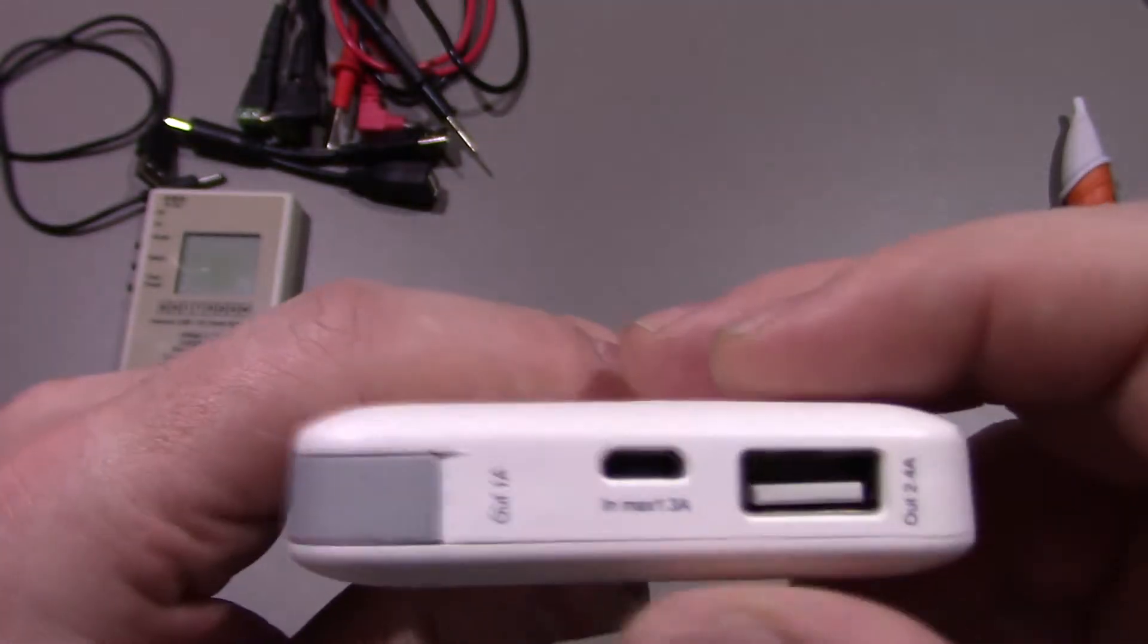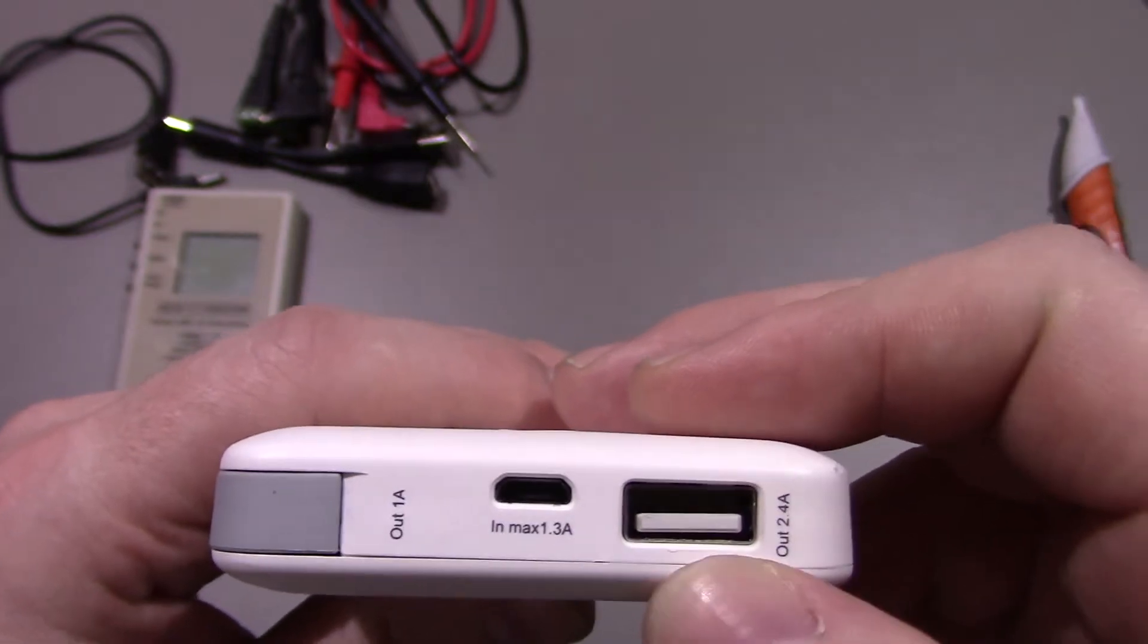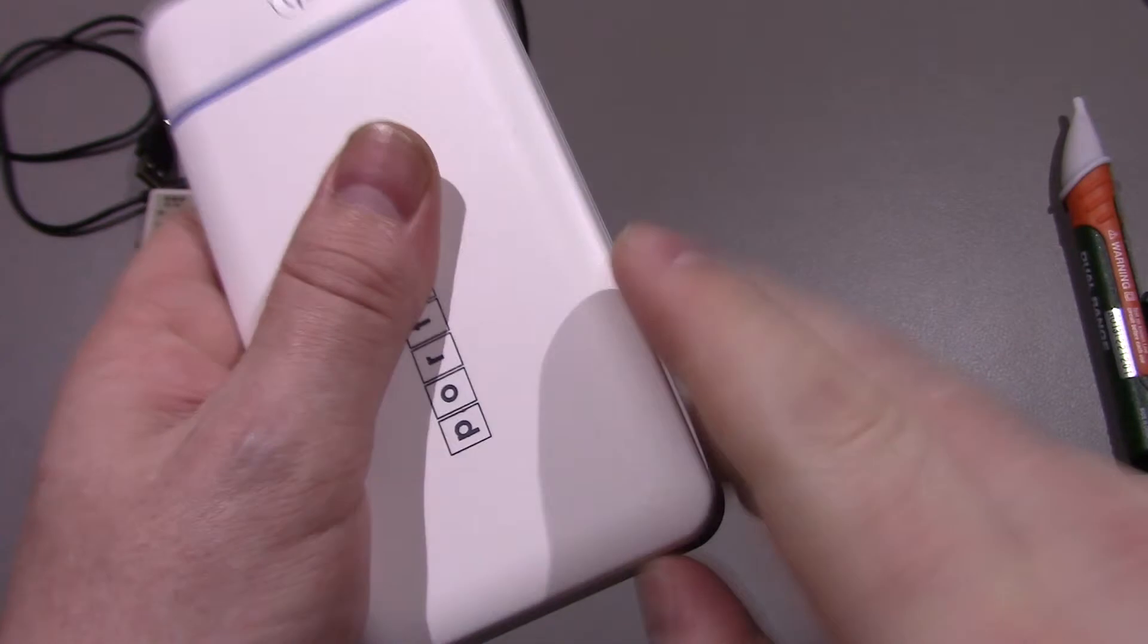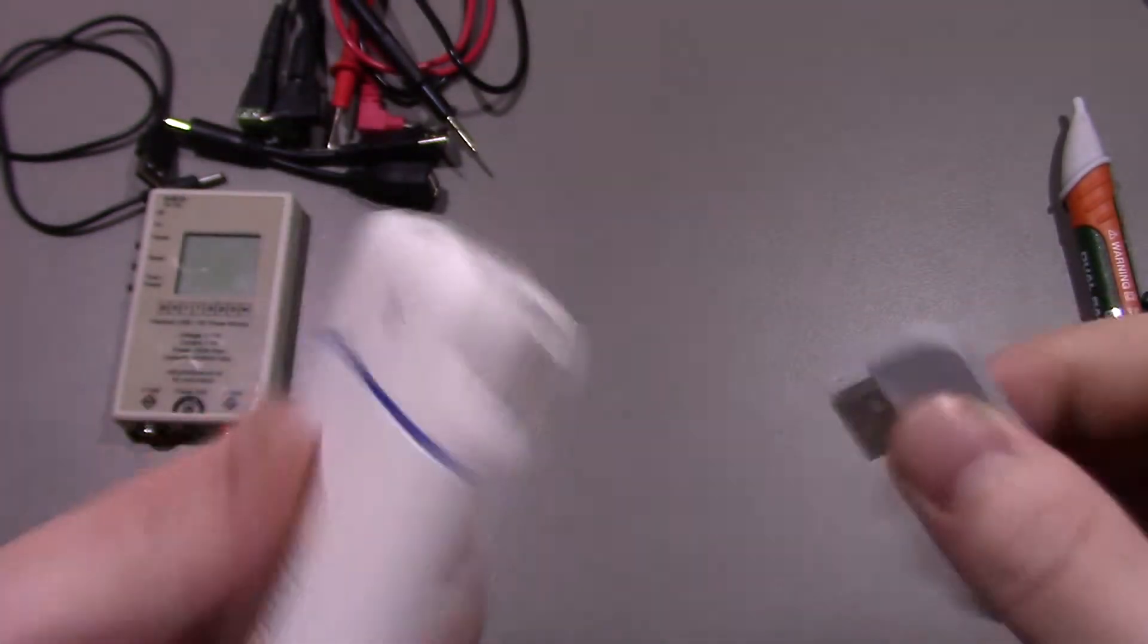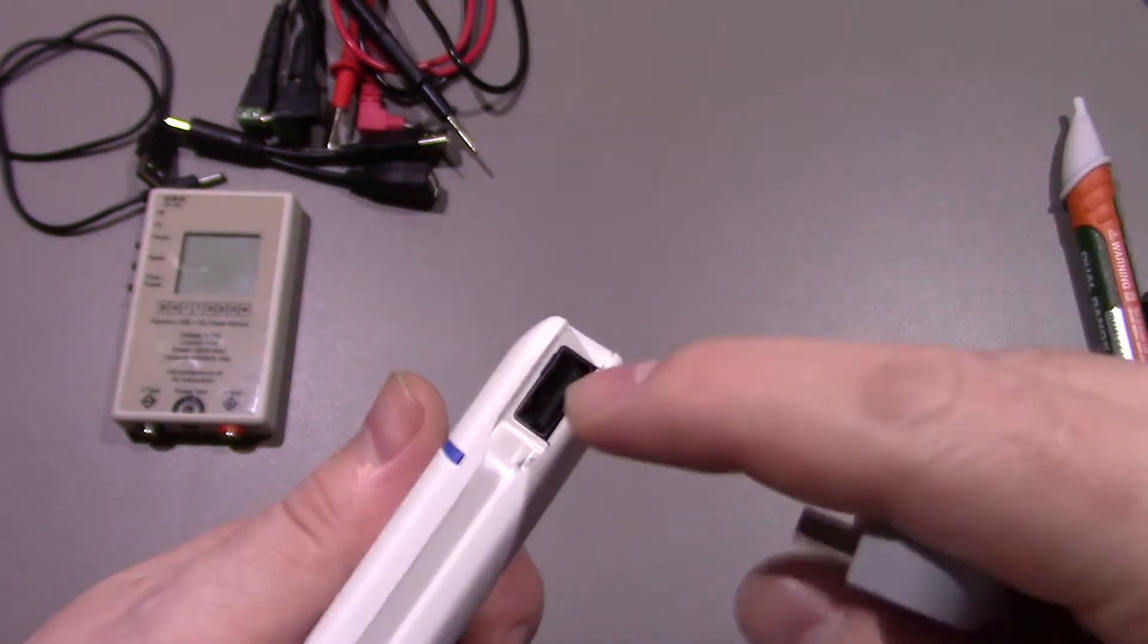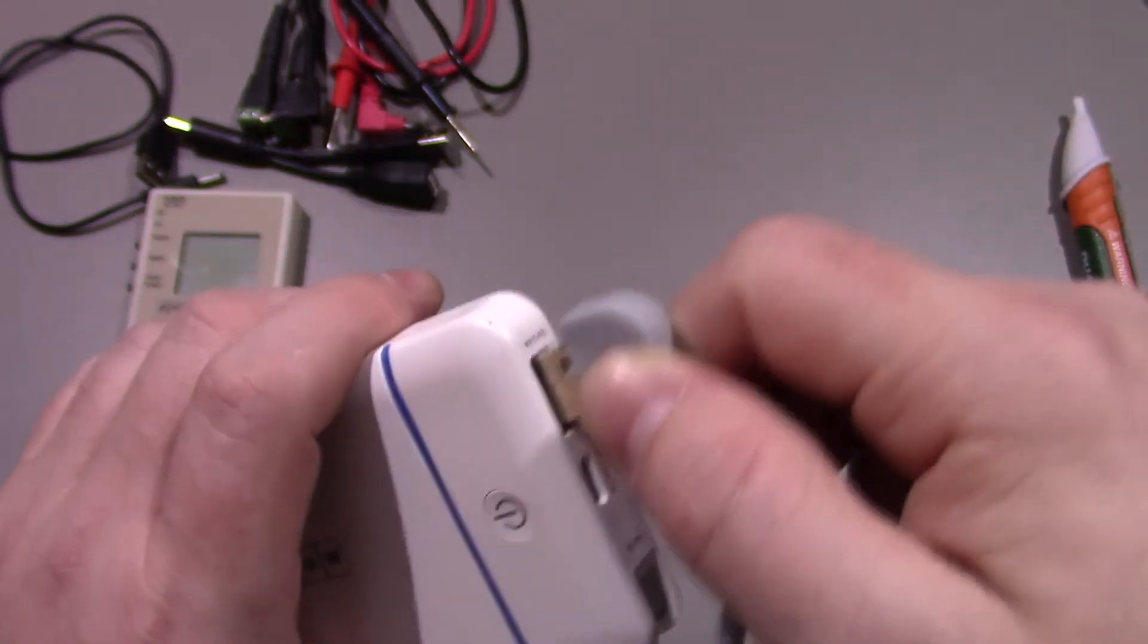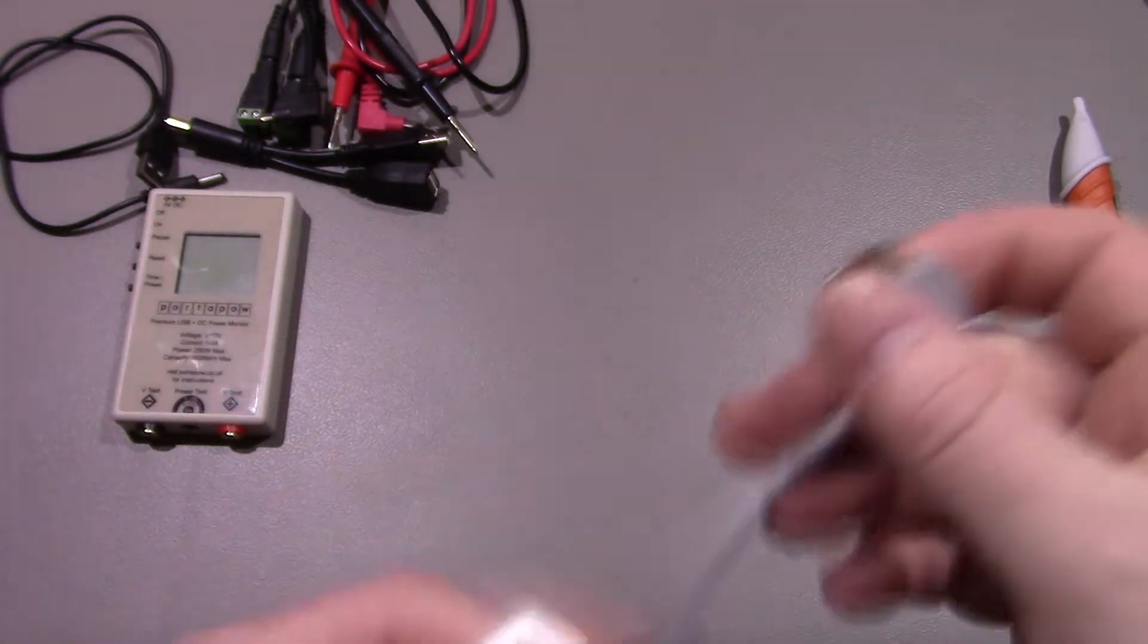You've got on there, your input there for charging. You've got your output there at 2.1 amps. And then you've got this handy little built-in cable here. Which is clipped into the side. Like that you see. So there you've got a 1 amp output there as well. And then you can use this to plug in, connect your phone to that, without needing to carry extra cables.